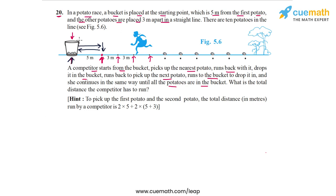Then she would have gone to the second potato, which is 5 plus 3 or 8 meters away, and then come back 8 meters to put the second potato into the bucket. Then she would have traveled to the third potato and come back — traveling 5 plus 3 plus 3 meters, or 11 meters one way and then 11 meters back, and so on.